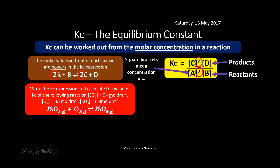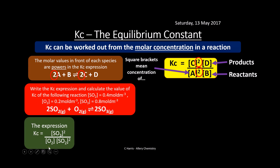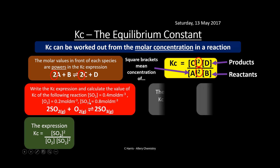For the SO₂ oxidation example: [SO₂] = 0.4, [O₂] = 0.2, [SO₃] = 0.8. The Kc expression is products over reactants — [SO₃]² on top (power of two because of the coefficient), divided by [O₂] × [SO₂]². The calculation gives: (0.8)² / (0.2 × (0.4)²) = Kc of 20.